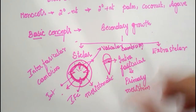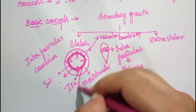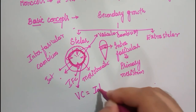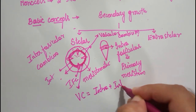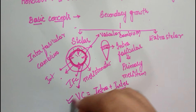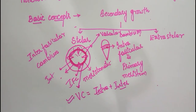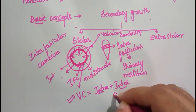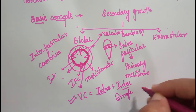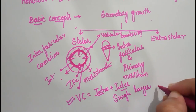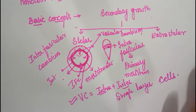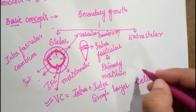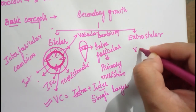This ring formed by the joining of intrafascicular cambium and interfascicular cambium is called the vascular cambium ring. This is a very important fundamental concept in secondary growth. The vascular cambium ring is made up of only a single layer of cells, not multiple layers.